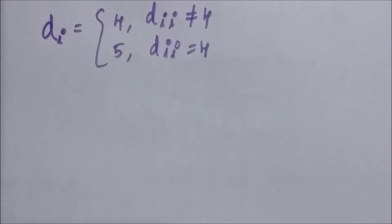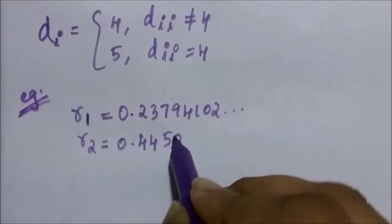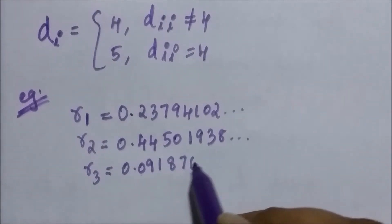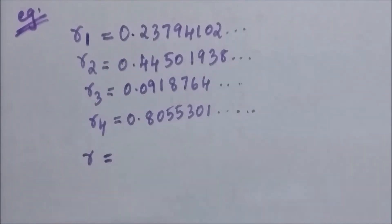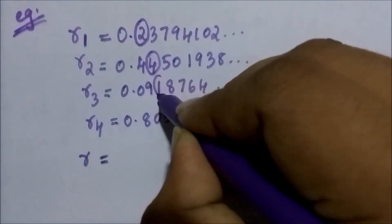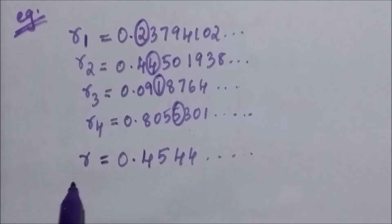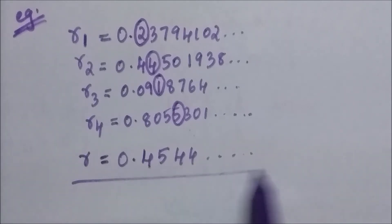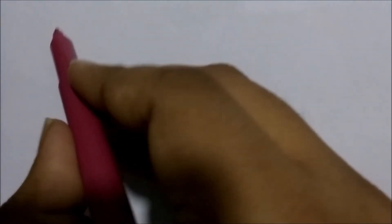For example, consider the listing: R1 = 0.23794102..., R2 = 0.44501938..., R3 = 0.09187640..., R4 = 0.80553010... and so on. Now we form a new real number R = 0.4544... Here D1 = 4 because D11 was not equal to 4; D2 = 5 because D22 was equal to 4; D3 = 4 because D33 was not equal to 4; D4 = 4 because D44 was not equal to 4. In this way we get a new real number.